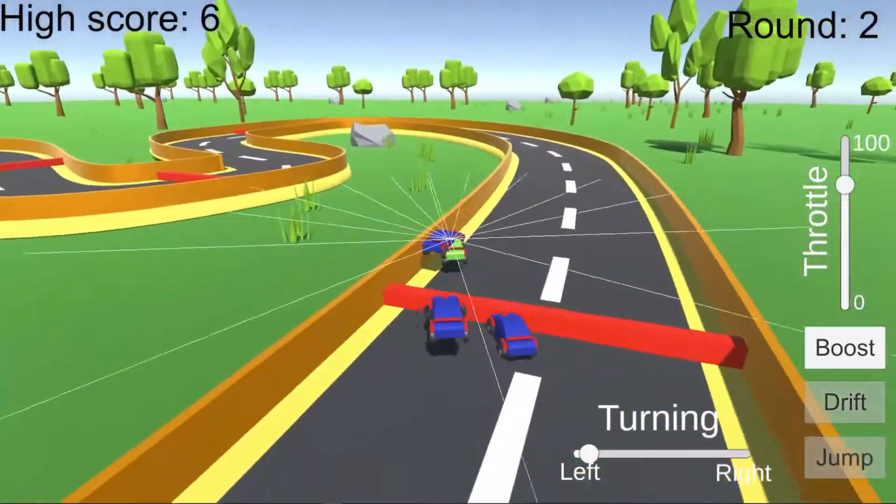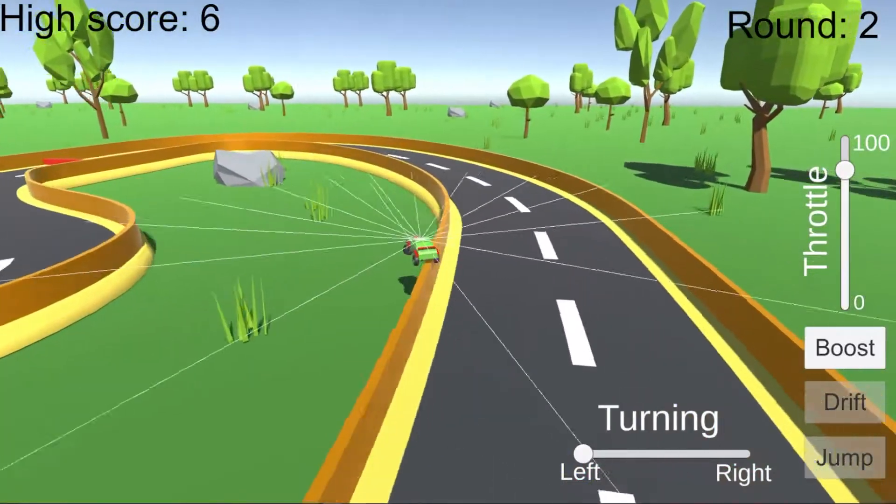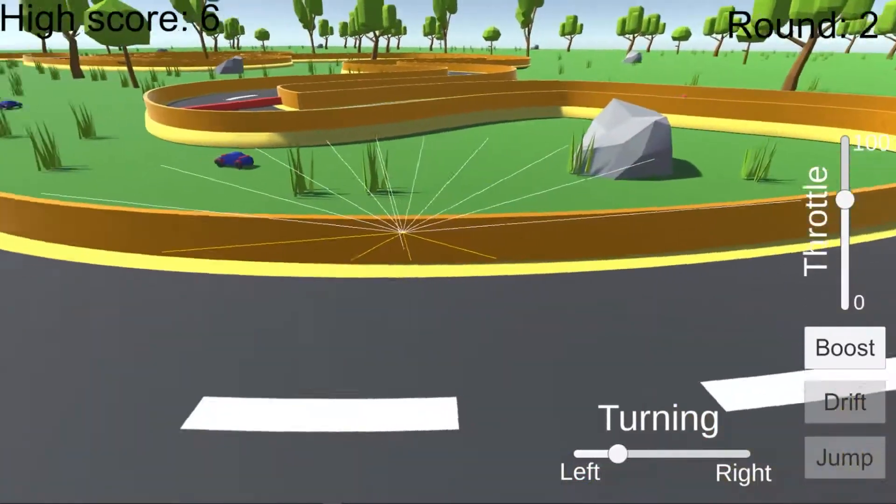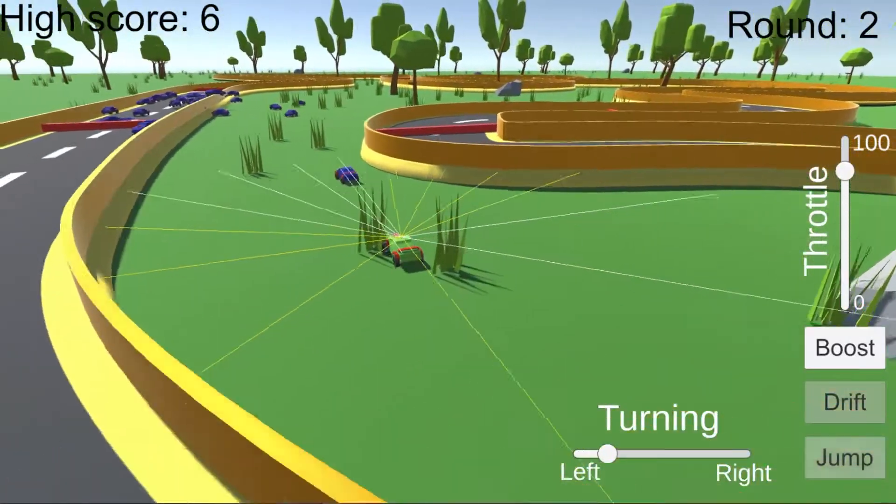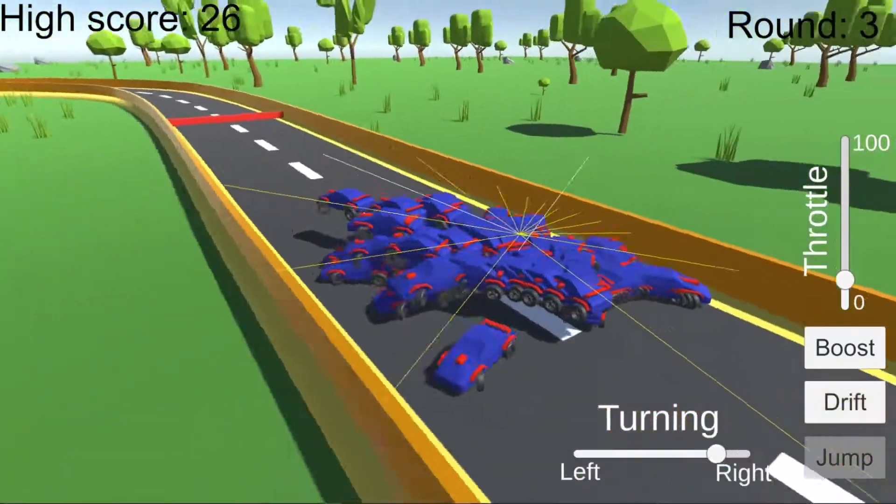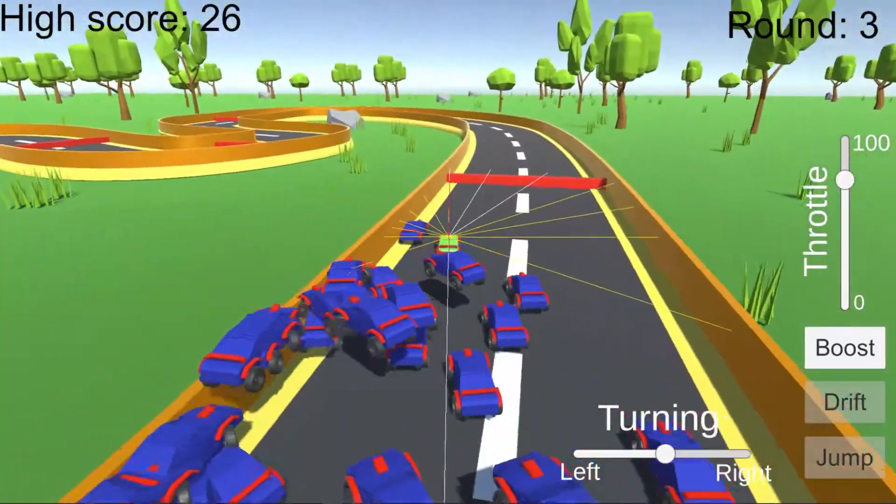Okay, so all the cars are training right now and they're trying to learn how to jump over these hurdles. The way that they learn is through genetic evolution of neural networks. All the cars start off with completely random networks at the beginning and they get a score based on how far they go on the track.